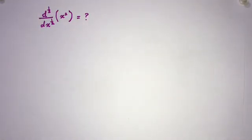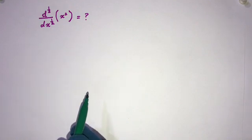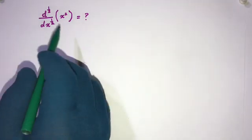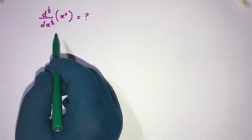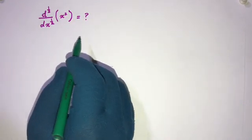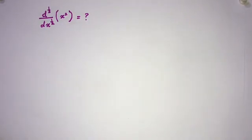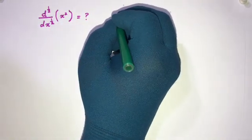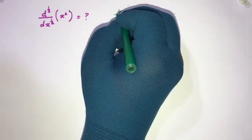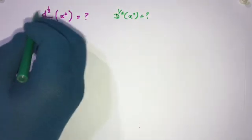Hi, welcome to the Mathematics channel. Today we are going to solve another interesting fractional differentiation question: how to find the half derivative of x squared. First, I am going to take the general case. We know this notation — we can write d^(1/2) x squared, which is also equal to the half derivative of x squared.